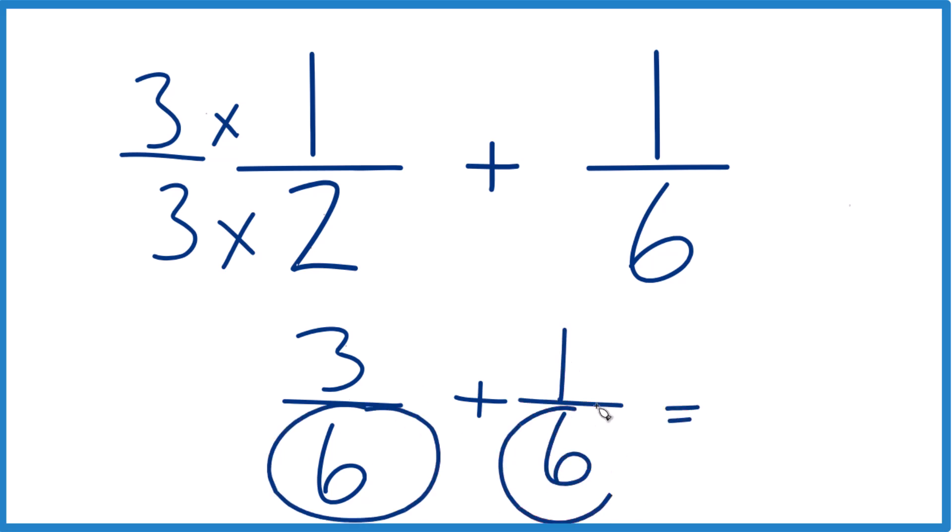Same denominators, we just add the numerators here together. 3 plus 1 is 4, and we keep the 6 the same. So 1 half plus 1 sixth, that equals 4 sixths.